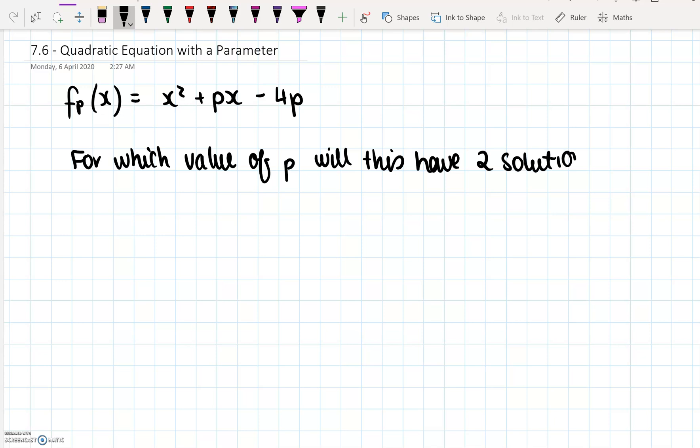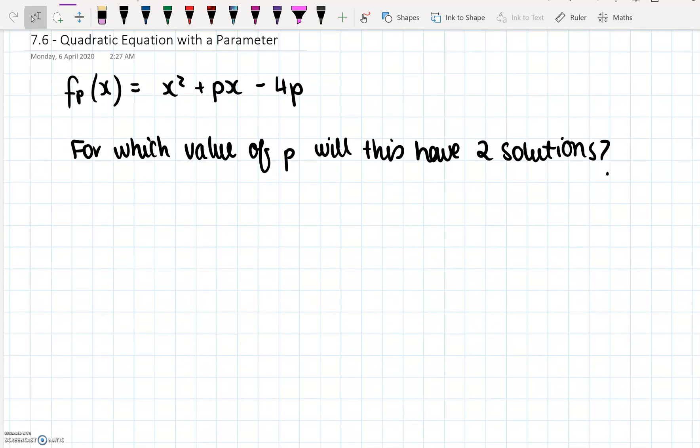We know that firstly, this is a quadratic equation. We have x squared as our highest power of x. So we know with a quadratic equation that if we want to have two solutions, then the discriminant D has to be greater than zero. Now in this case, D is equal to b squared minus 4ac.